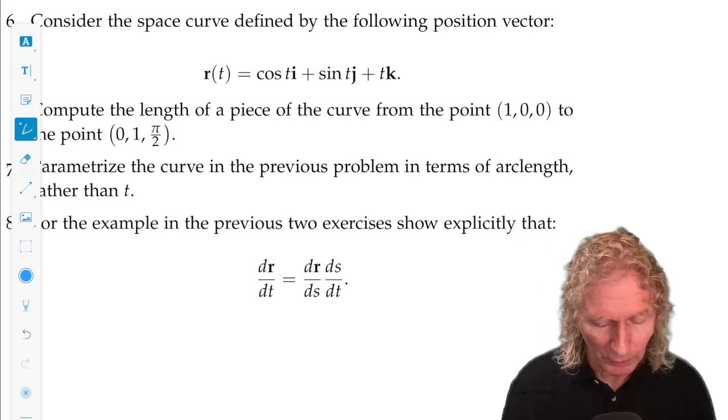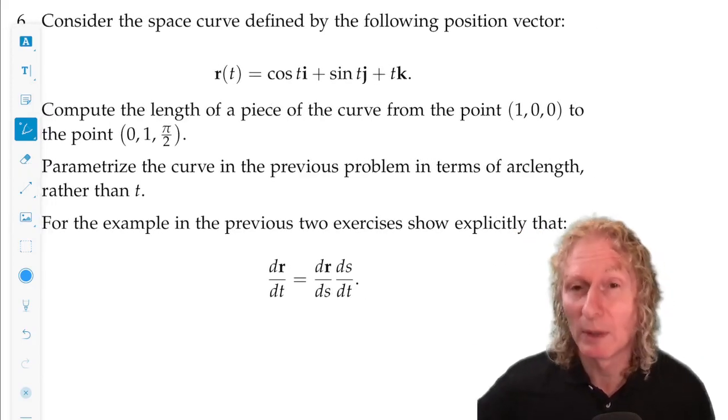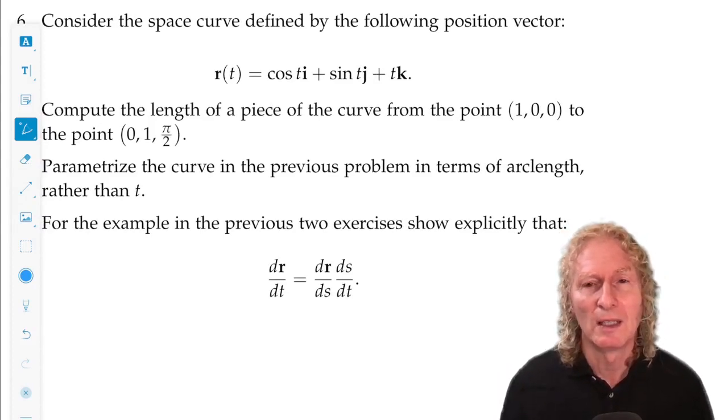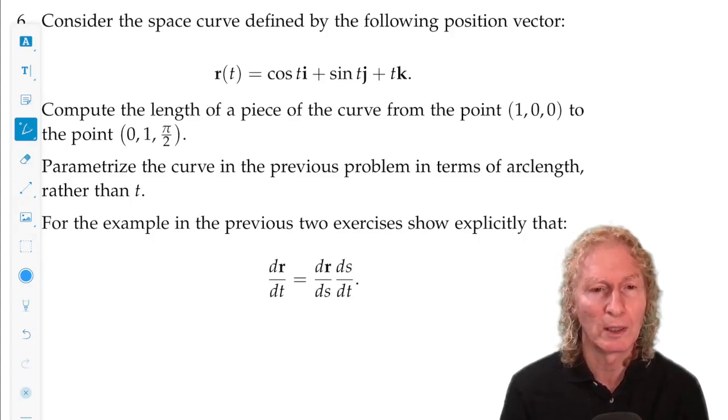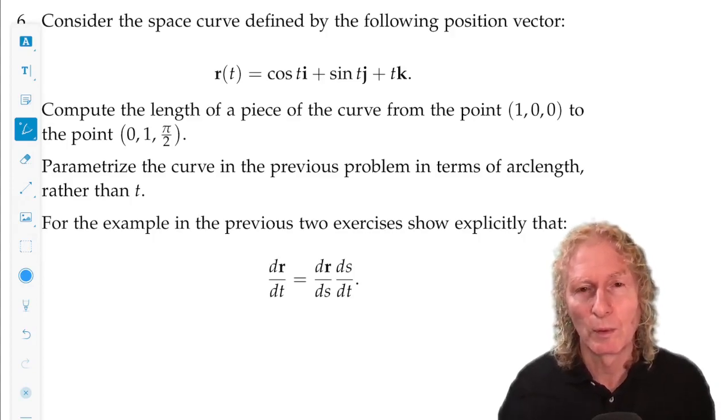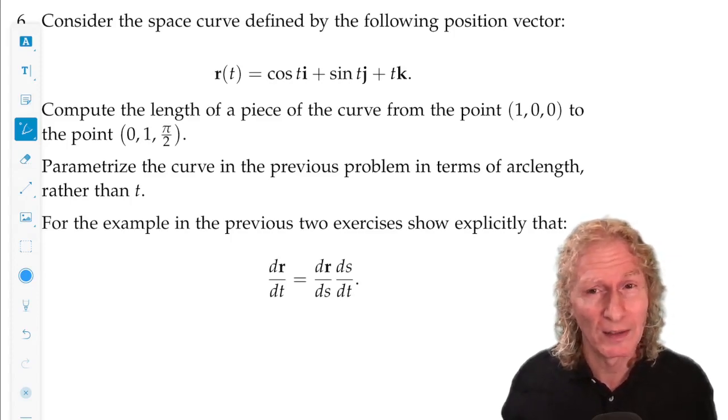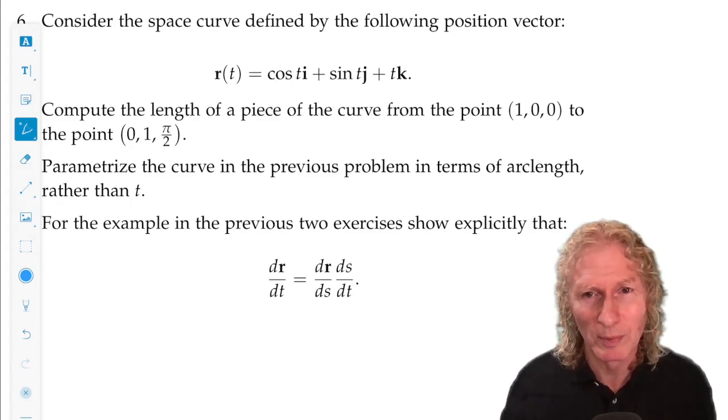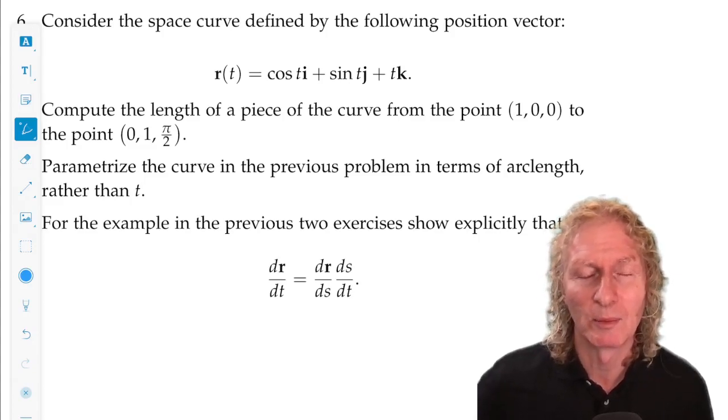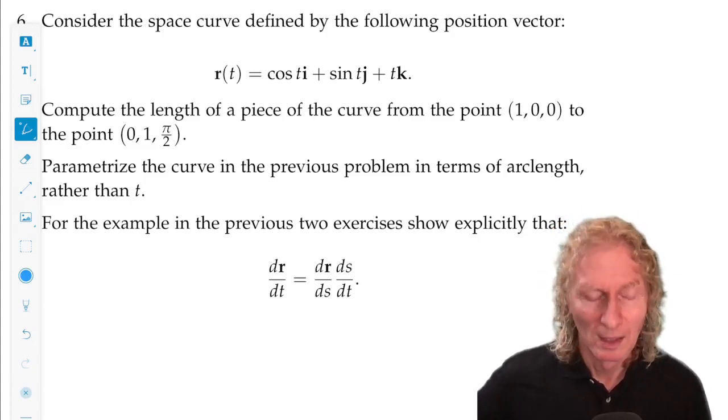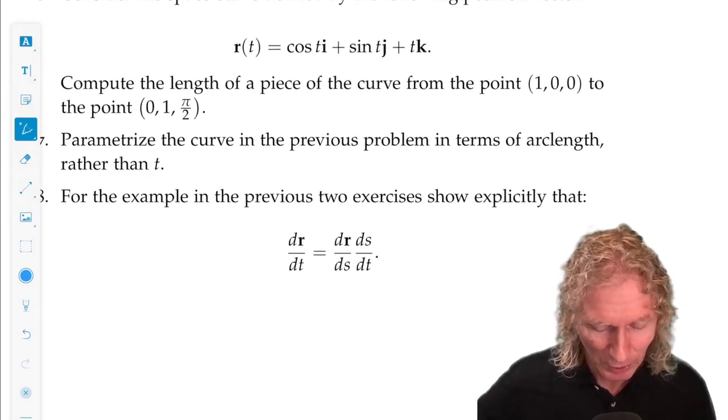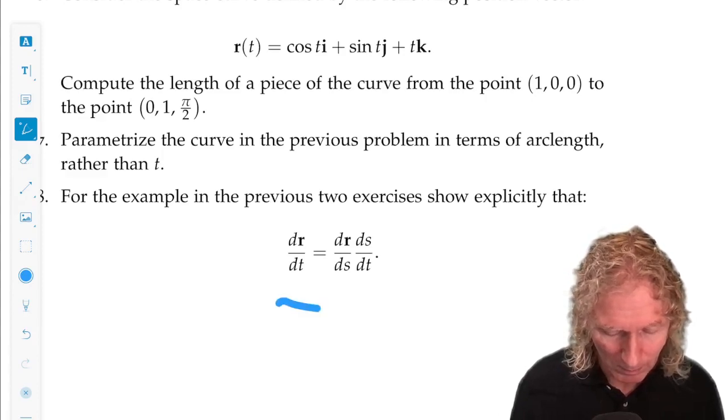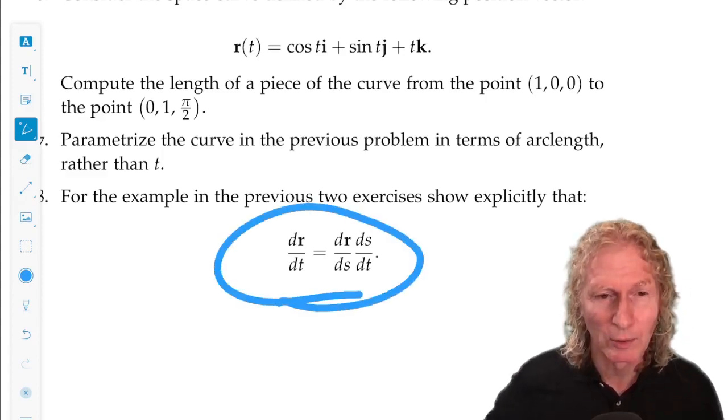For this example in the previous two exercises, I want you to show explicitly, now I did this in the lecture when I was defining uppercase T, the unit tangent vector. Often when you see chain rules, they tend to go very fast, and it always looks good. But then if you want to verify it in a specific example, that's when the real test is. And so that's what I want you to do in this problem. Show that that relation that I derived in generality holds for this specific example.